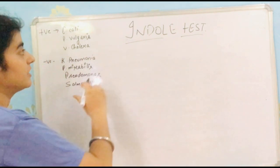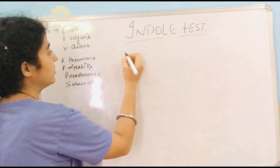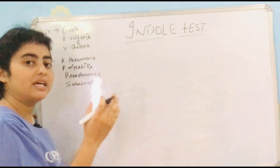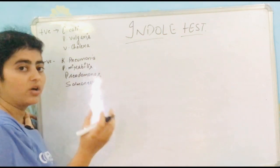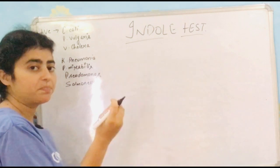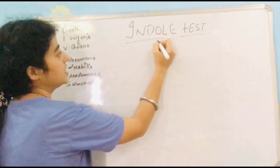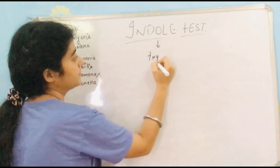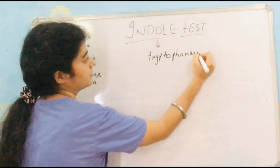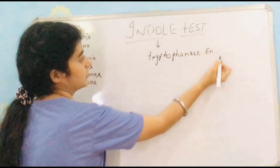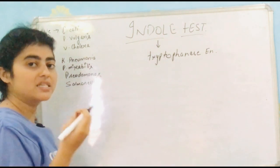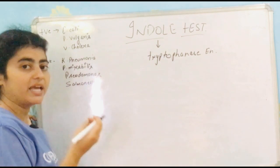The principle of the indole test is that we detect whether the bacteria in our petri plate produces tryptophanase enzyme or not. So what we detect is tryptophanase enzyme. To detect this enzyme we need a substrate so that the reaction is possible.